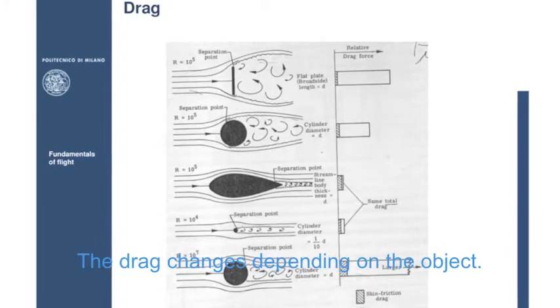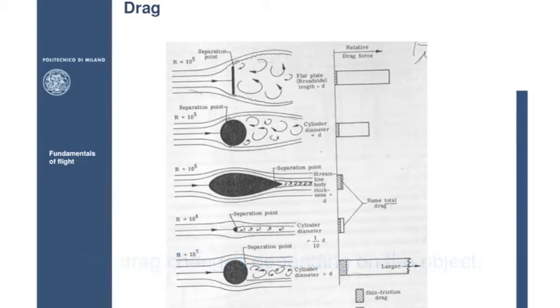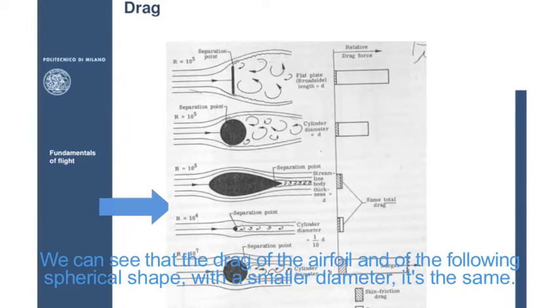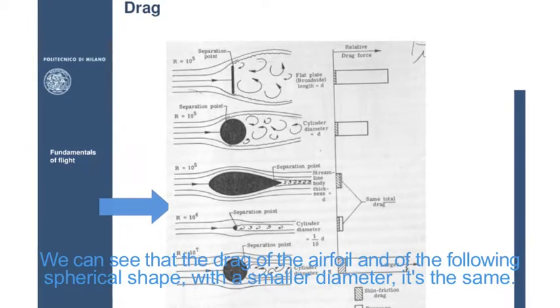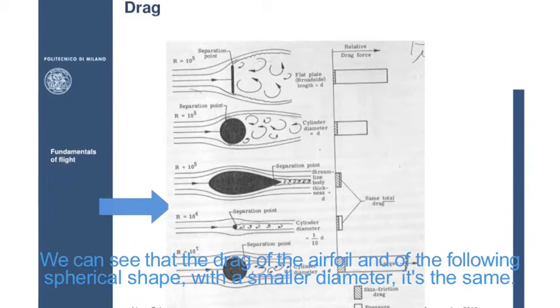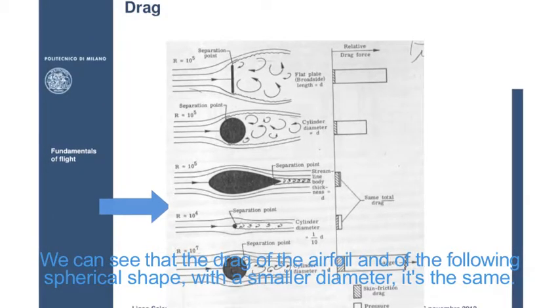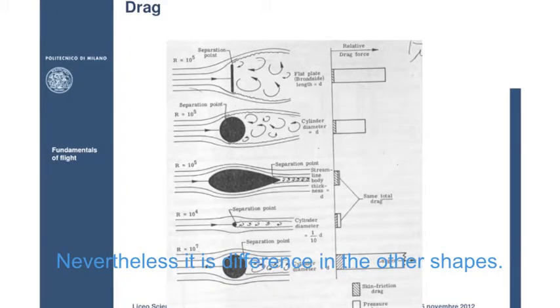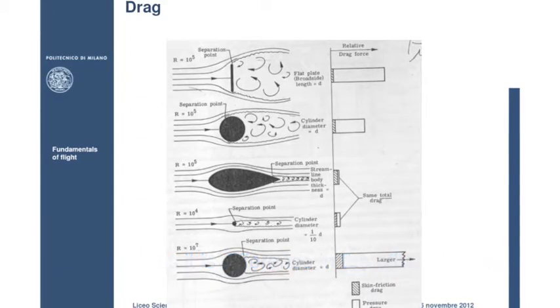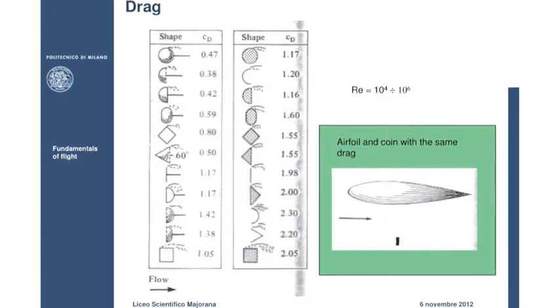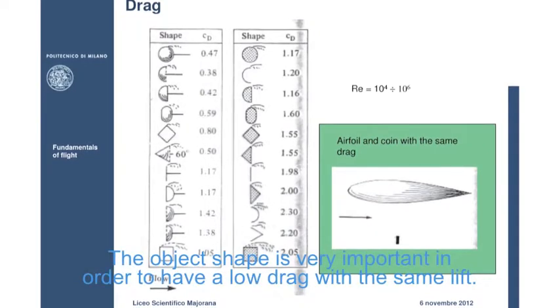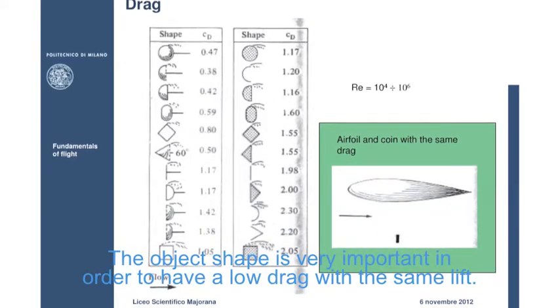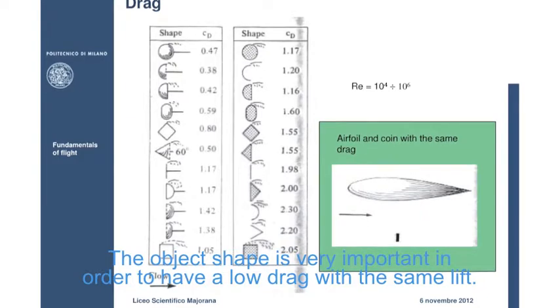The drag changes depending on the object. It can be seen that the drag of the airfoil and of the following cylindrical shape is the same, whereas it is different in other cases. The shape of the object becomes very important in order to have a low drag with the same lift.